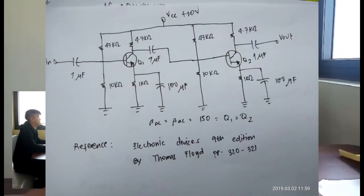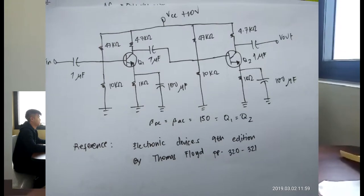For solving a multi-stage amplifier, DC and AC analysis is used. First, we should solve for the first stage of the amplifier. Using DC analysis, we should get the following.